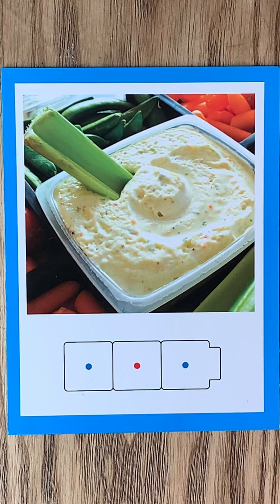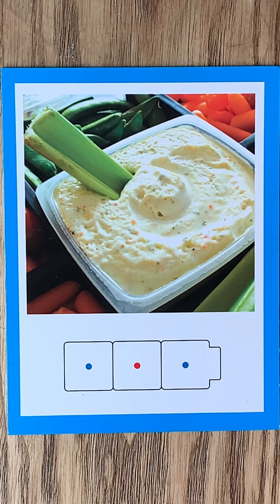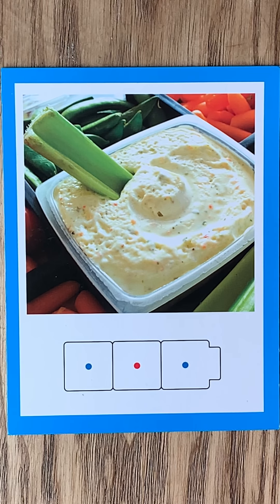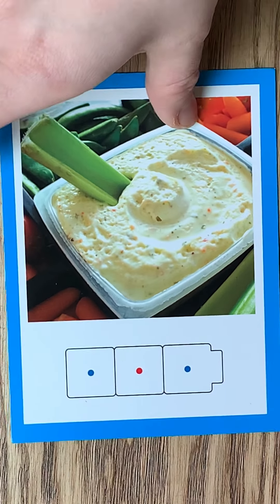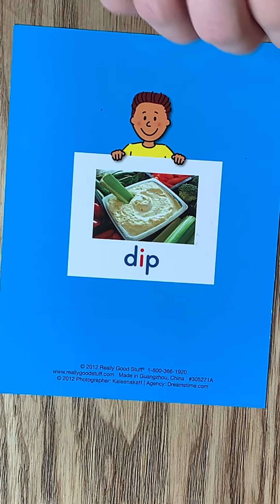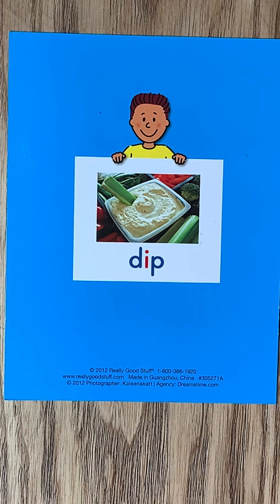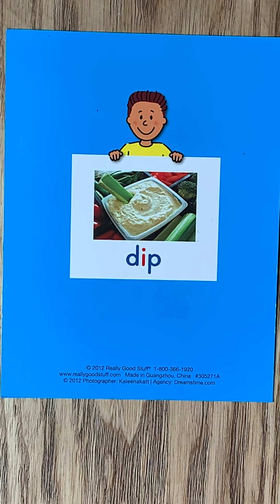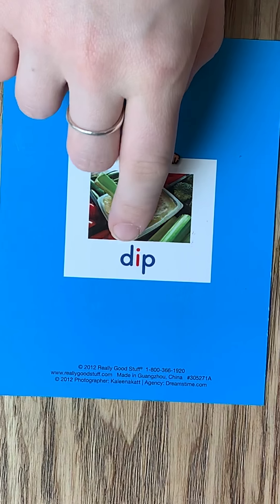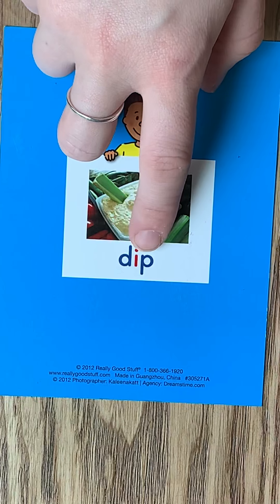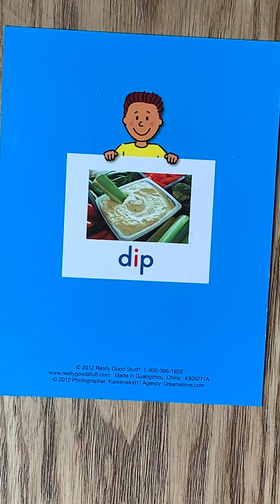Number one is the word dip. D-I-P. Dip. I'm going to give you a few moments to write dip and then I'm going to turn the card over so you can check your answer is correct. D-I-P. Dip. Make sure you have that D and not a B, and you have your I, not an E.